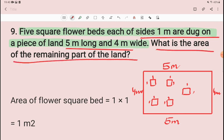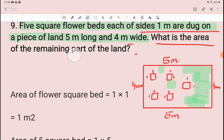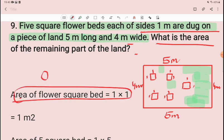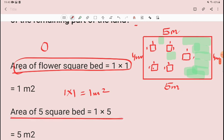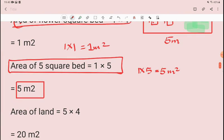Find the area of the remaining part of the land. The hidden area, we need to remove that area. Look, there is a big rectangle. We have made 5 squares. Area of flower square beds, this small area, what is this? 1 into 1, 1 meter square. And since there are 5, area of 5 square beds is 1 into 5. So the area of 5 square beds is 5 meter square.